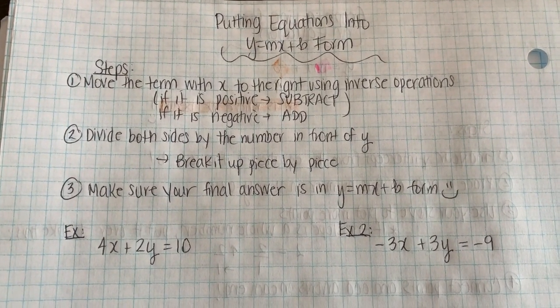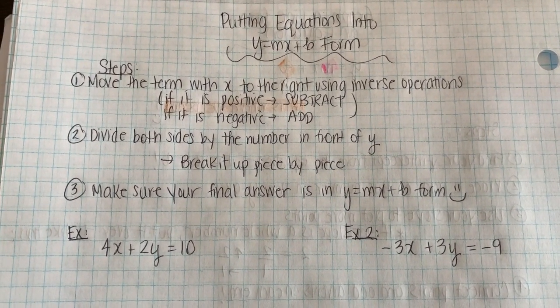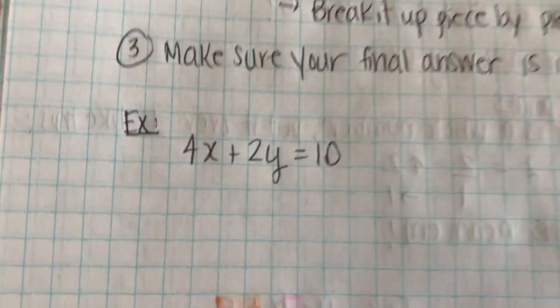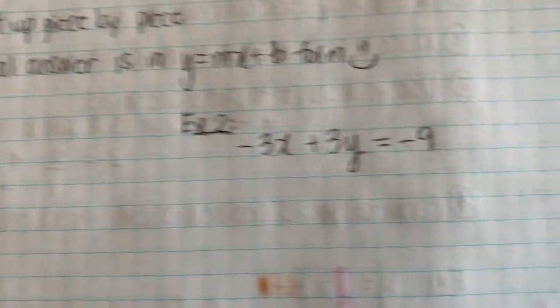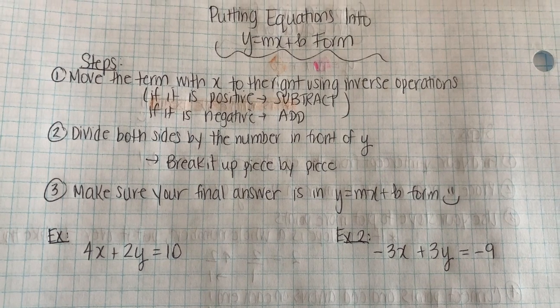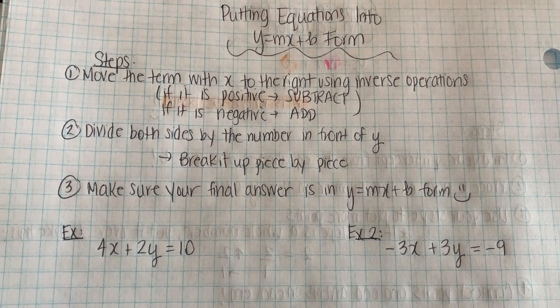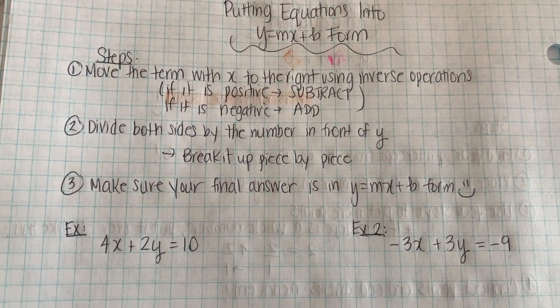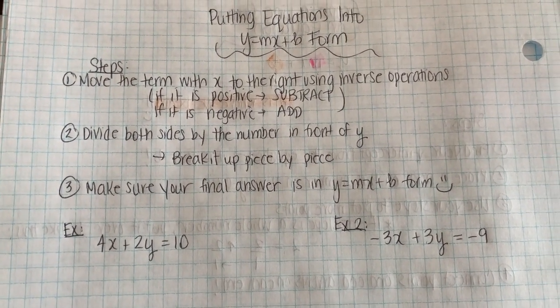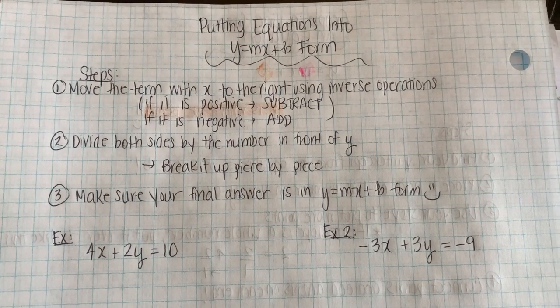Sometimes when we have to graph a line, we're given an equation that's not in y equals mx plus b form, like this one and this one. So before we can graph the line or do anything else, we have to turn it into y equals mx plus b form. So what I did for you is I wrote out some steps that can be followed when the lines are in this form, which is called standard form.